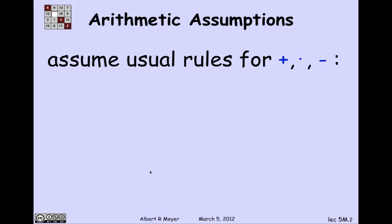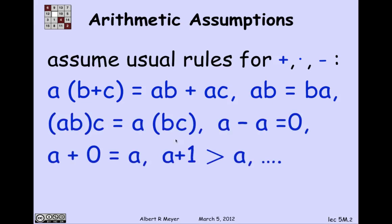So let's begin by stating the rules of the game. We're going to assume all of the usual algebraic rules for addition and multiplication and subtraction. So you may know some of these rules have names. Like the first equality is called distributivity of multiplication over plus. And then the second rule here is called commutativity of multiplication. And here are some more familiar rules. This is called associativity of multiplication.